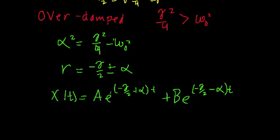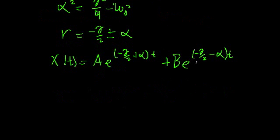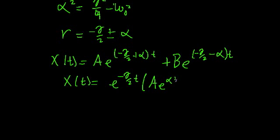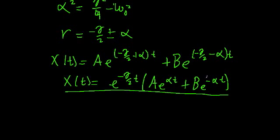Now we can simplify it up a bit by factoring out this common exponential term. And we'll find that x of t is equal to e to the negative gamma over two times t, times A e to the alpha t plus B e to the negative alpha t. And that's that. We found our general solution.